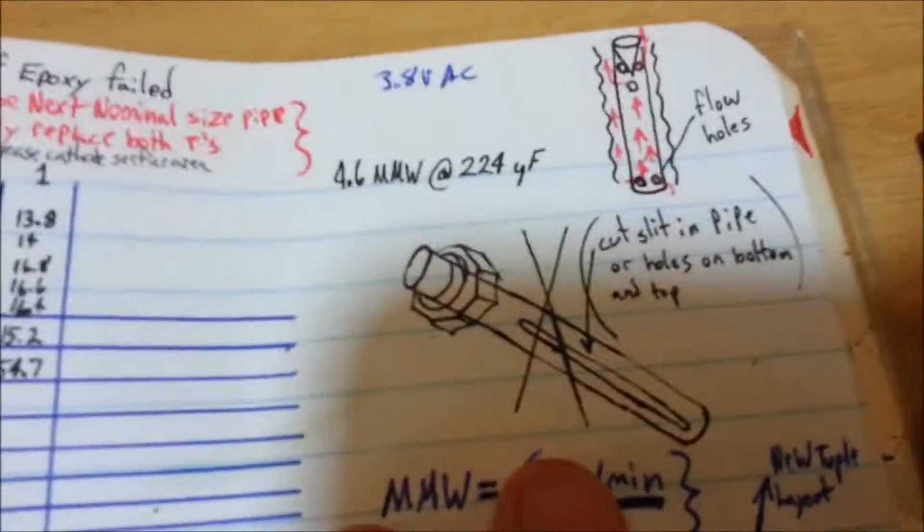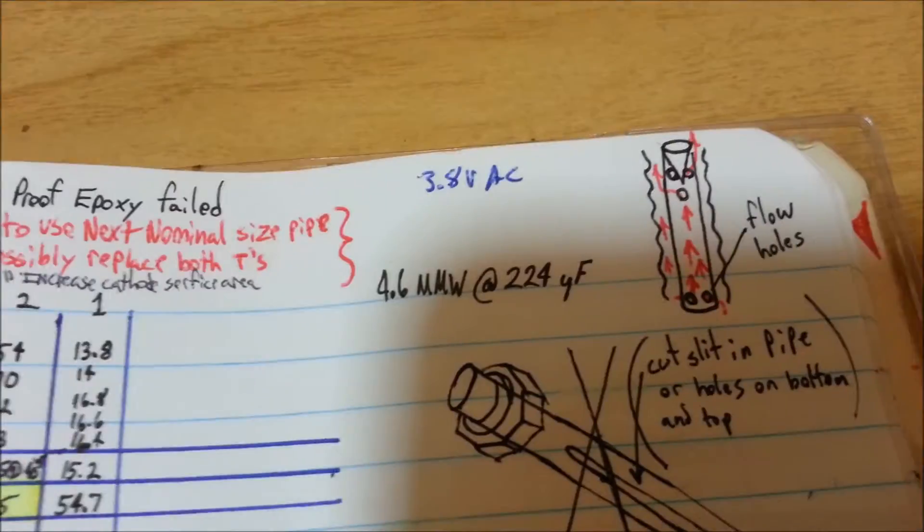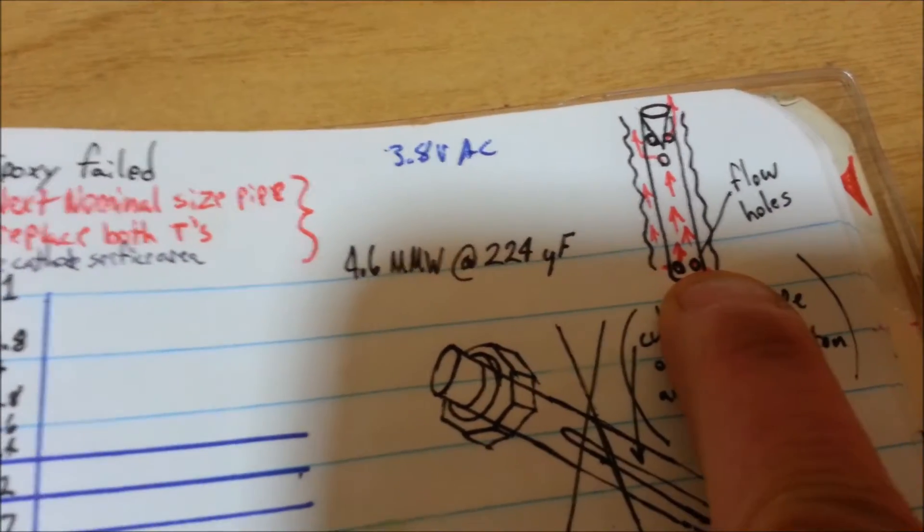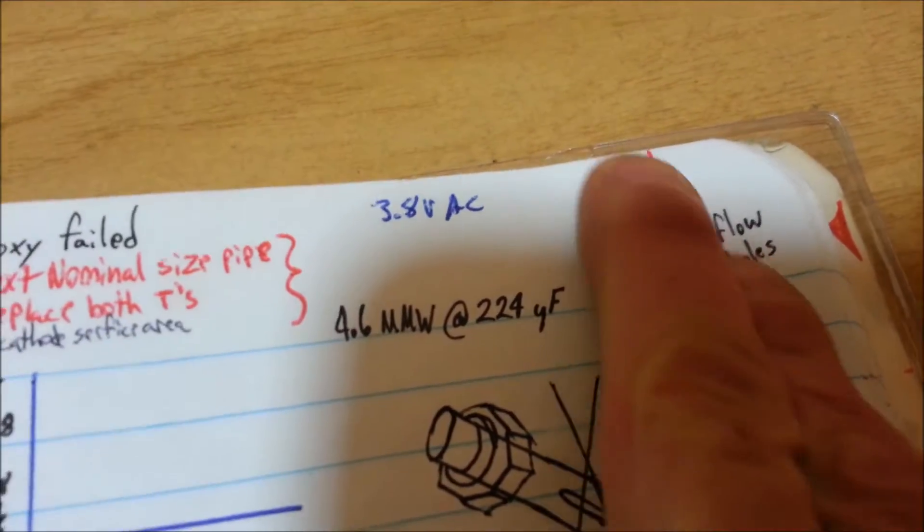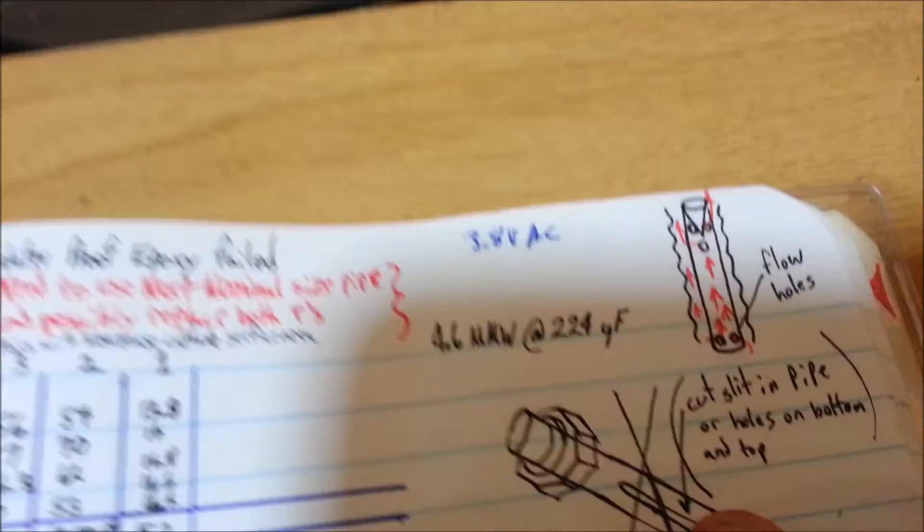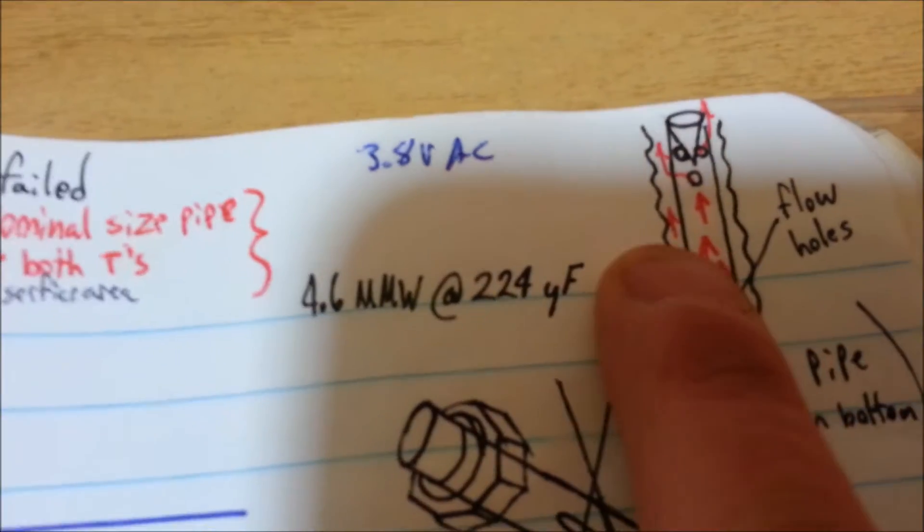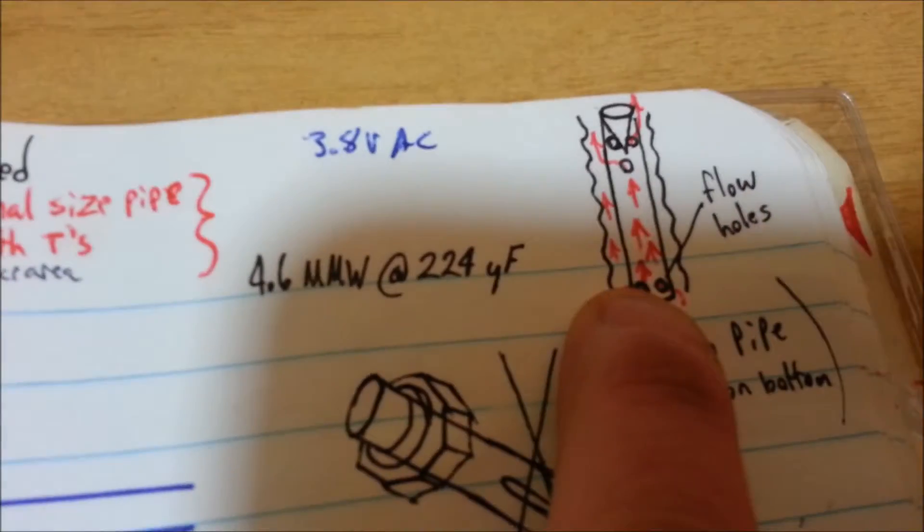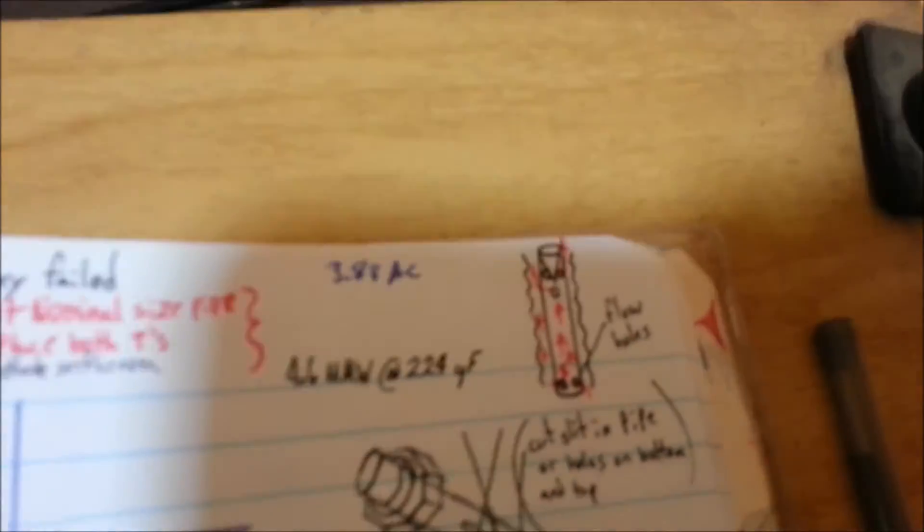Here are some ideas I had for different shapes of the cathode. Perhaps if we put some slits in it, or maybe some holes so that electrolyte could flow through it, and the gas would cause flow. And we would be able to double the surface area of the inner cathode by cutting like a small slit, or maybe holes at the bottom, and holes at the top, to allow electrolyte in at the bottom, and gas and electrolyte flow out the top of that inner cathode here.